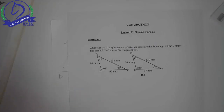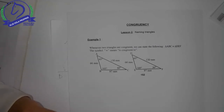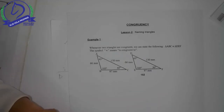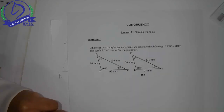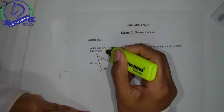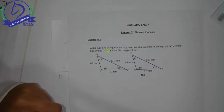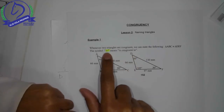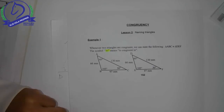This leads to triangle geometry in grade 12 when you get to that. So let's just recap. Whenever two triangles are congruent, we can state the following: triangle ABC is congruent to triangle DEF. The three horizontal lines means 'is congruent to'. So you don't have to write the words - this is math, so we just use the symbol, three horizontal lines.